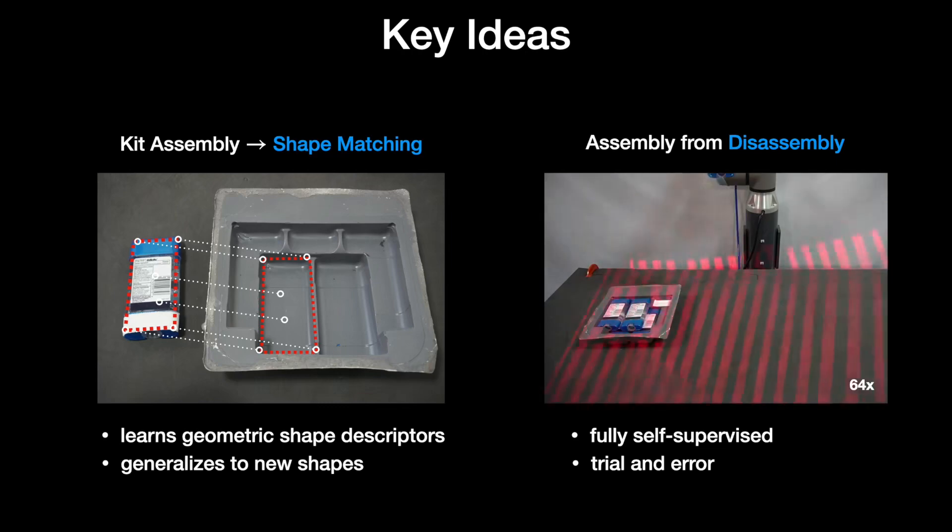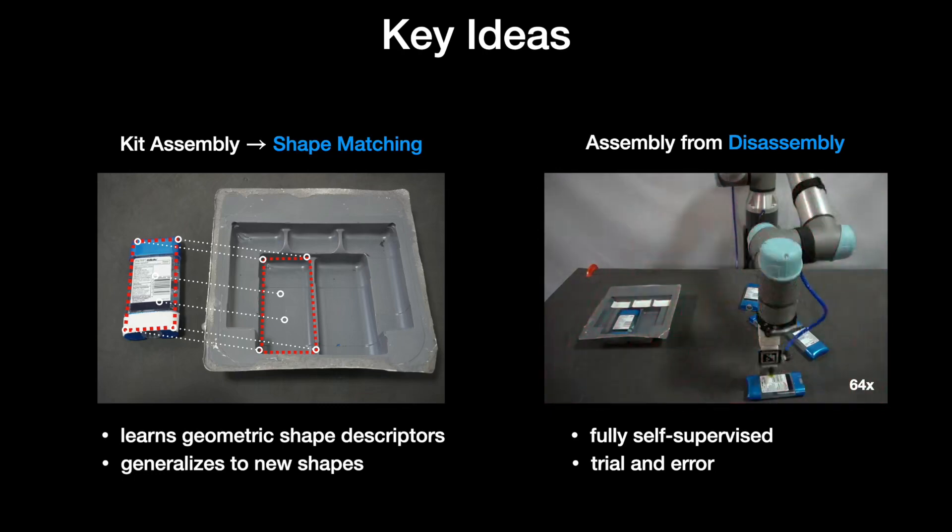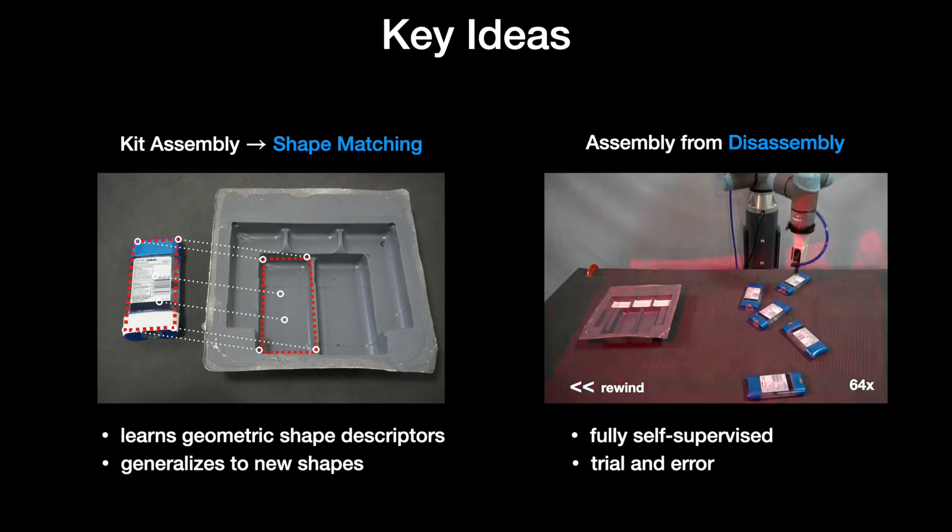disassembling completed units is often much easier to learn since there are fewer incorrect ways to remove an object than there are to correctly insert it. Form2Fit leverages this difference to amass training data by randomly disassembling a fully assembled kit, then rewinding the sequence in reverse to learn how the kit should be put together.